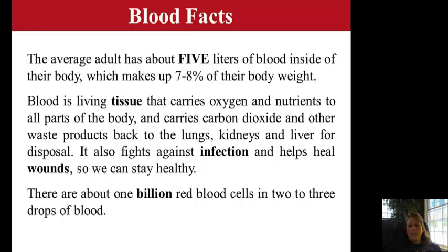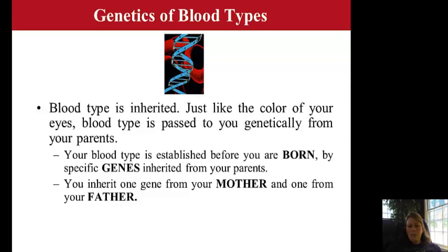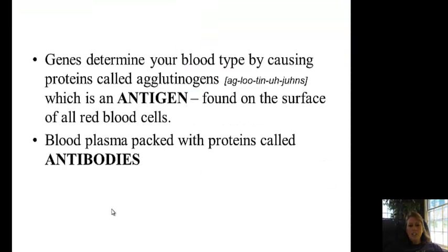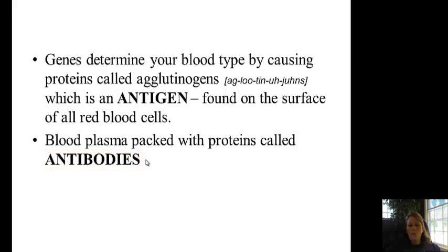We're going to be looking at what's called the antigens and the antibodies found on the blood cells — those are proteins. Now blood typing — you may have done this in your biology class or genetics. Just like your genes carry and pass on heredity from parent to offspring, the same thing is true for blood type, so you're going to get one gene from your mother and one gene from your father. There's a particular protein called agglutogens, and that is an antigen found on the surface of the red blood cells. Antibodies are found in the plasma, the liquid portion, and those are also proteins.